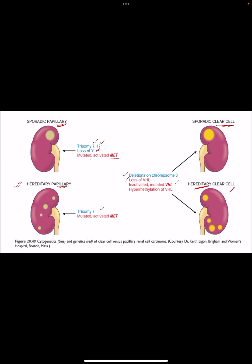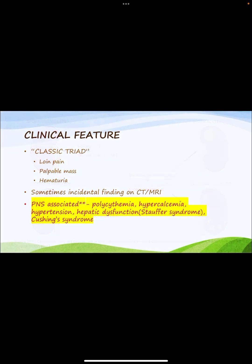In hereditary papillary RCC, only trisomy 7 is seen, with the MET proto-oncogene on chromosome 7 mutated or activated. When MET is activated, it causes increased tyrosine kinase activity, leading to uncontrolled proliferation and papillary RCC.